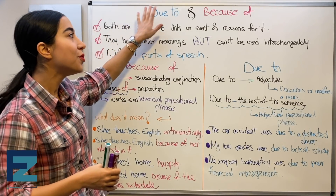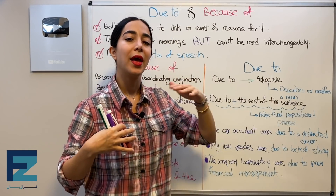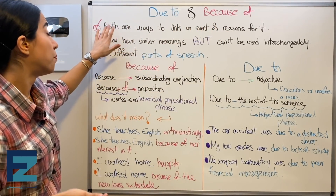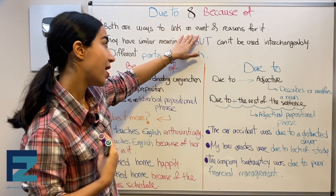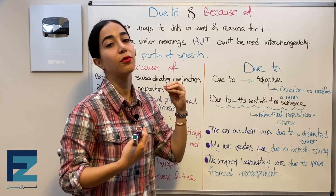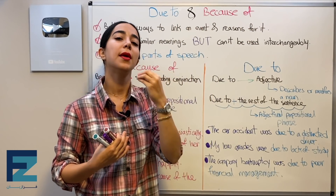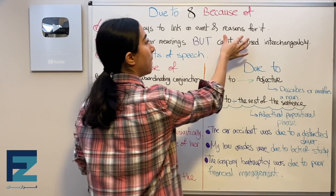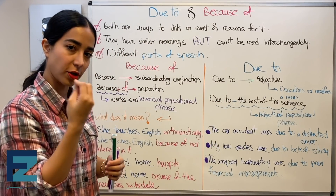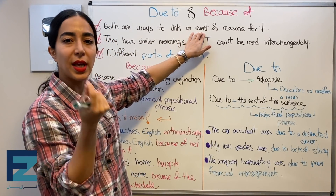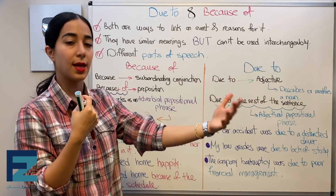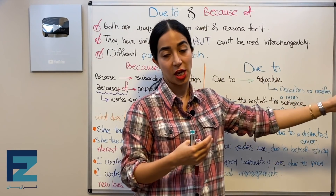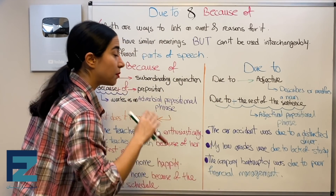The differences between 'due to' and 'because of' — where, when, and how to use them in your speaking or writing. Due to and because of are both ways to link an event and the reasons for it. They have similar meanings but can't be used interchangeably.